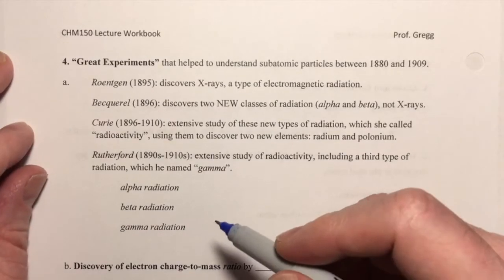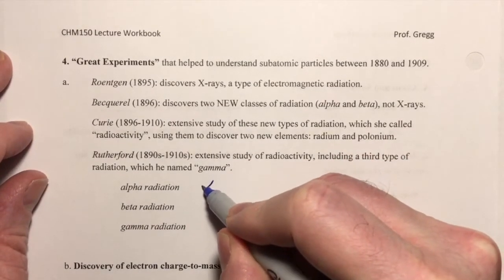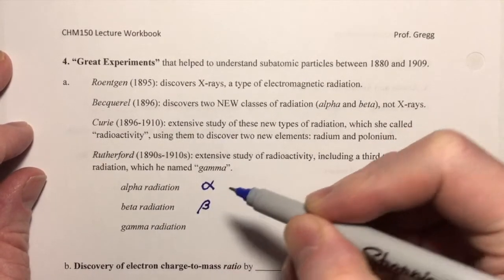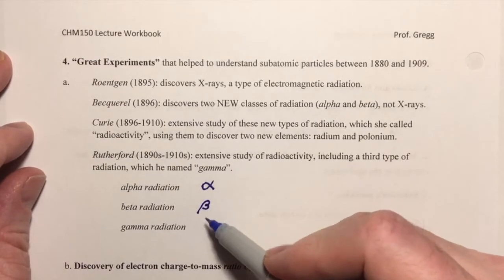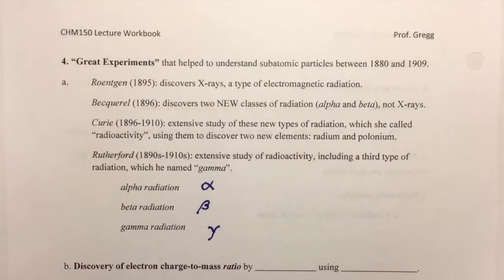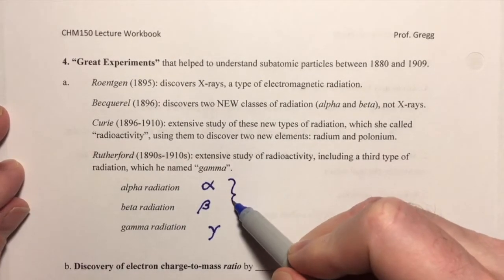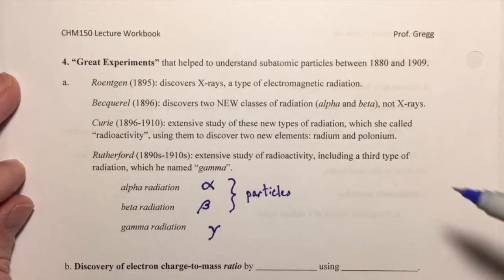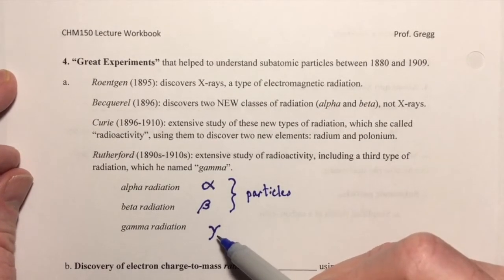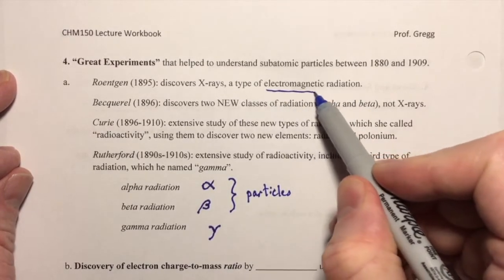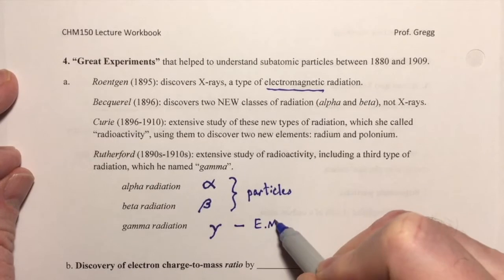There are symbols you should probably be familiar with. There's the Greek letter alpha — these are lowercase alpha. This is the Greek letter beta, which looks like a capital B with a swoopy beginning. And gamma, which is kind of like a Y, almost an italic Y. So those are the symbols for those types of radiation. Alpha and beta are particulate — they are particles, so they have mass. Gamma radiation is not a particle. Like x-ray radiation, gamma radiation is a type of electromagnetic radiation, so it's EM radiation.